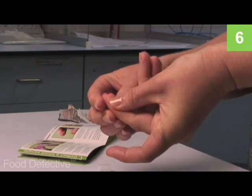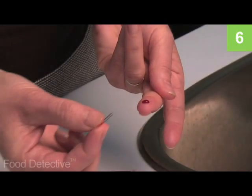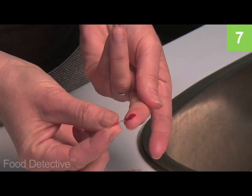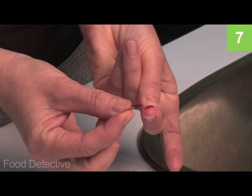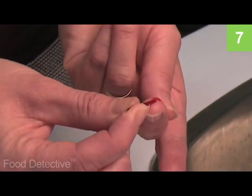Gently massage the finger in the direction of the puncture to obtain a droplet of blood. Touch one end of the glass tube against the drop of blood so that the blood is drawn into it. Take care that the other end of the tube is not covered. Completely fill the tube.